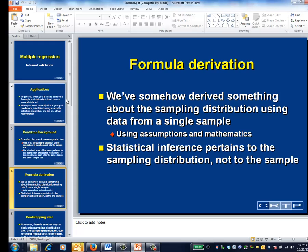So somehow, using assumptions and the power of mathematics, we've been able to use data from a single study, the estimate of sigma and the square root of n, to describe the characteristics of the sampling distribution. That is, we've been able to describe the characteristics of the distribution of means that would be observed were the sample to be repeatedly performed.